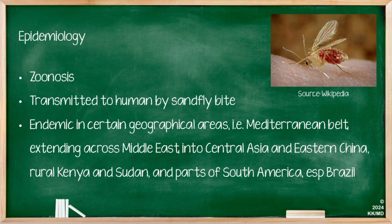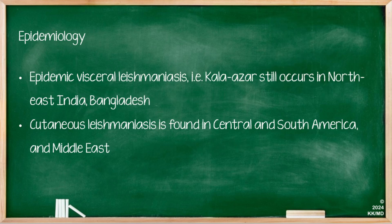It's endemic in certain parts of the world, particularly in the Mediterranean belt, extending to the Middle East, into Asia and Eastern China. It's also endemic in rural Kenya and Sudan and parts of South America, especially Brazil. The epidemic visceral leishmaniasis, known as Kala-azar, still occurs in North East India and Bangladesh. Cutaneous leishmaniasis is mostly found in South America and Central America, as well as the Middle East.